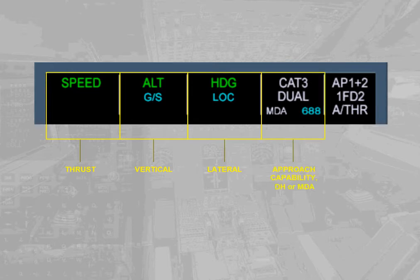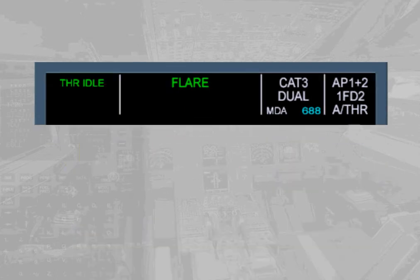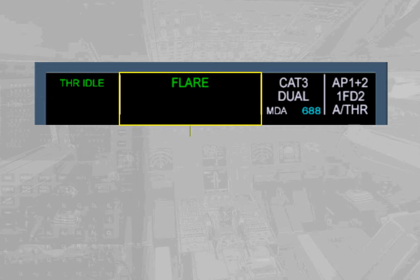The fourth column gives the approach capability of the autoflight system and the DH or MDA. The fifth column displays the engagement status of the autopilots, flight directors, and autothrust systems. In certain cases, the second and third columns are combined to display a single autopilot flight director mode common laterally and vertically — these are common modes for approach, meaning they are closely linked together. You will study all the modes in later modules.